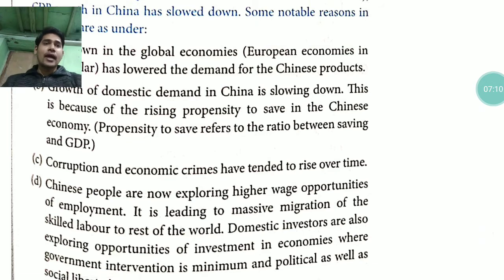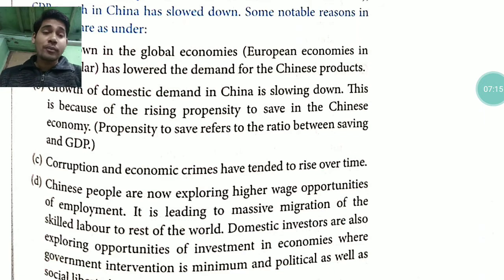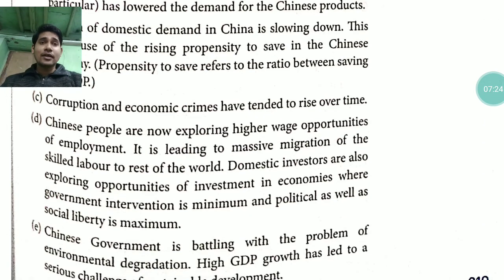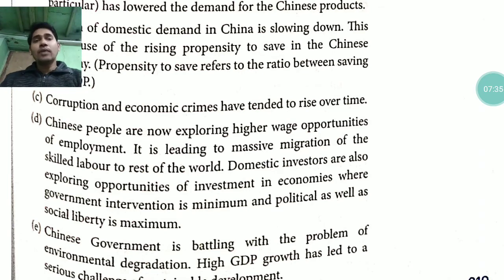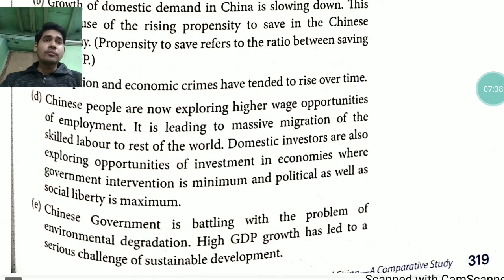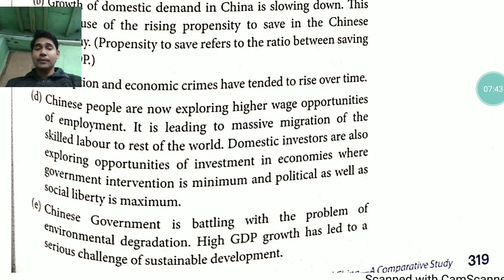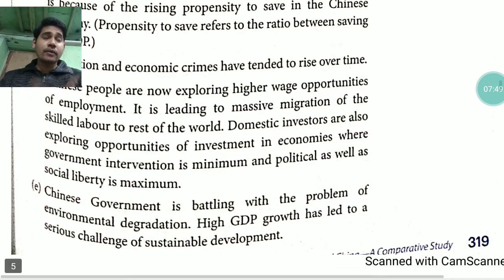Corruption and economic crimes have tended to rise over time in China, which has also reduced GDP. Chinese people are now exploring higher wage opportunities for employment, and this is leading to massive migration of skilled labor to the rest of the world — because they want higher wages or salaries.